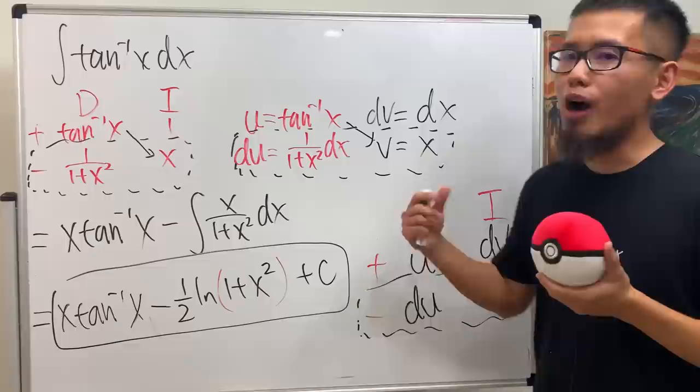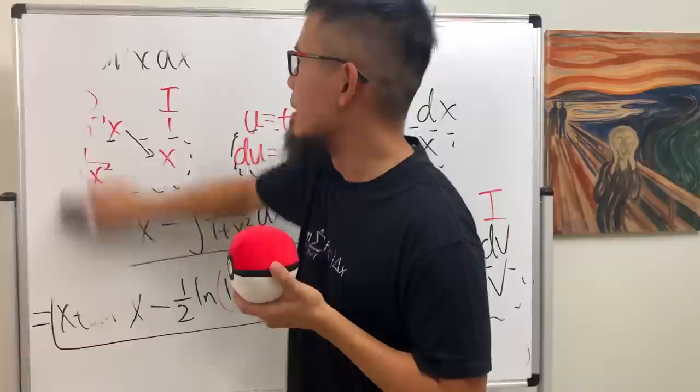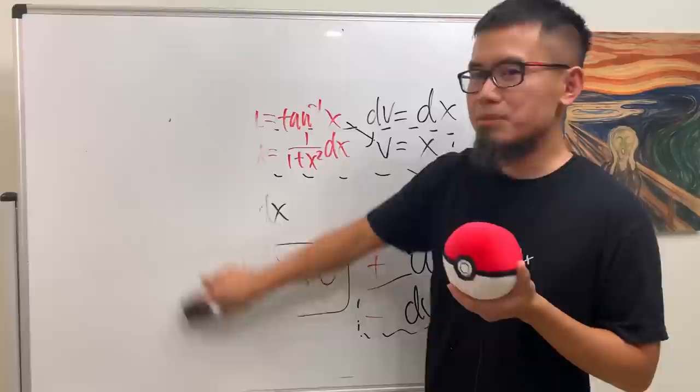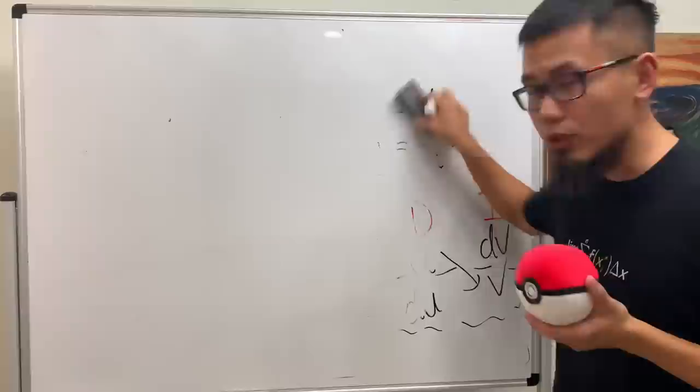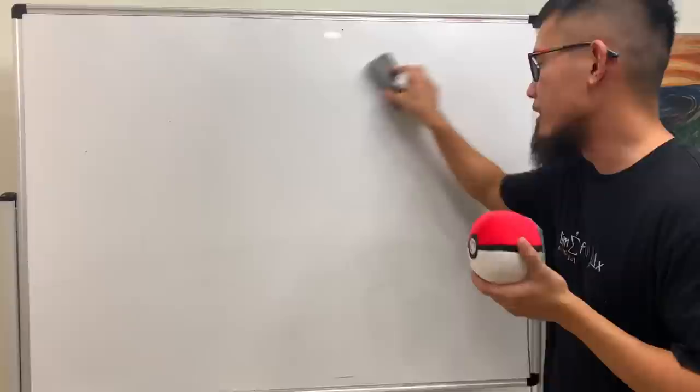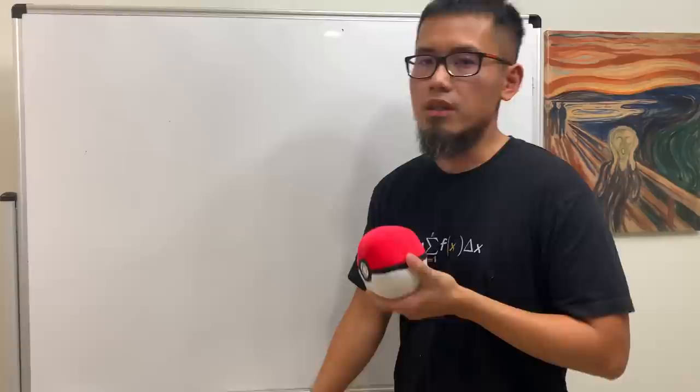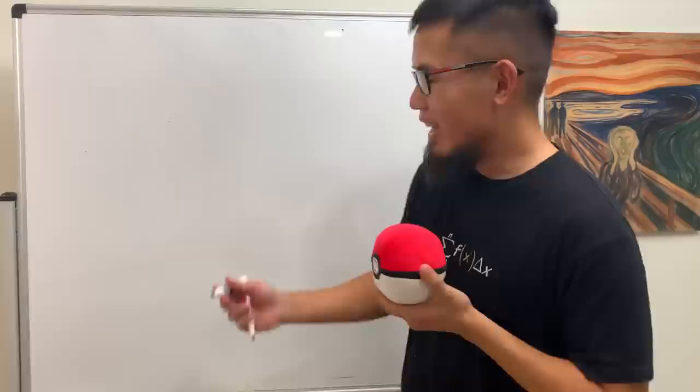Now let me show you the third stopping condition for the DI method. I really have to avoid calling it the 'DI method' because people will think it's a totally new method — but it's not new. I didn't invent it; a lot of people know this already. It's also called the tabular method. But I do hope to popularize the DI format so that students will like integration by parts a lot more.